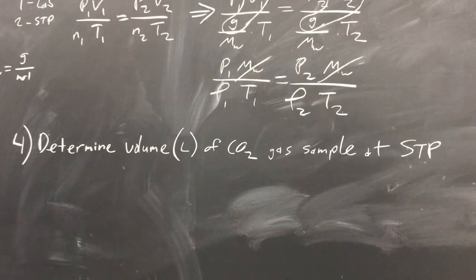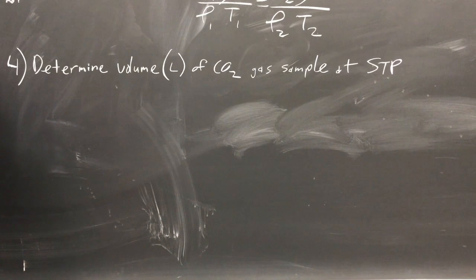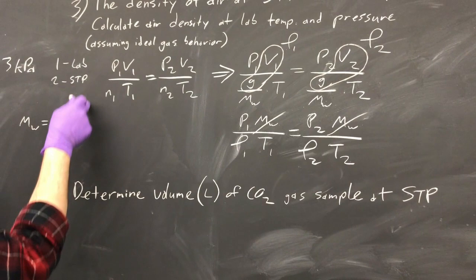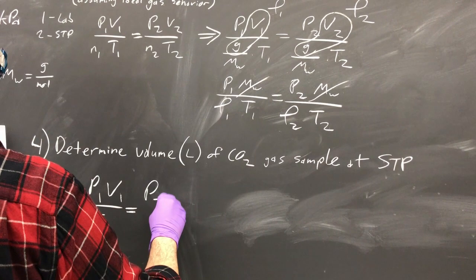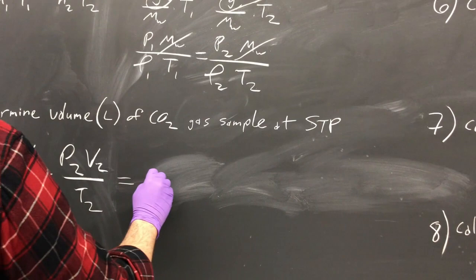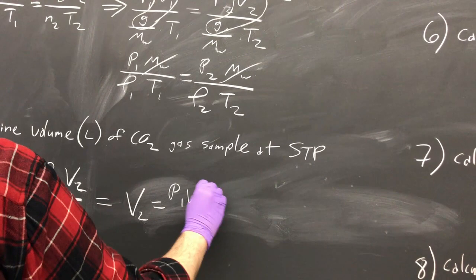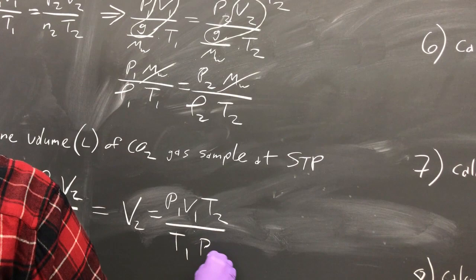So now we have to determine the volume of CO2 gas sample at STP. So with this relationship right here where sub 1 is lab temperature and pressure and then 2 is STP, you can just do P1V1 over T1 equals P2V2 over T2. And you'll solve for V2 equals P1V1T2 over T1 and P2.